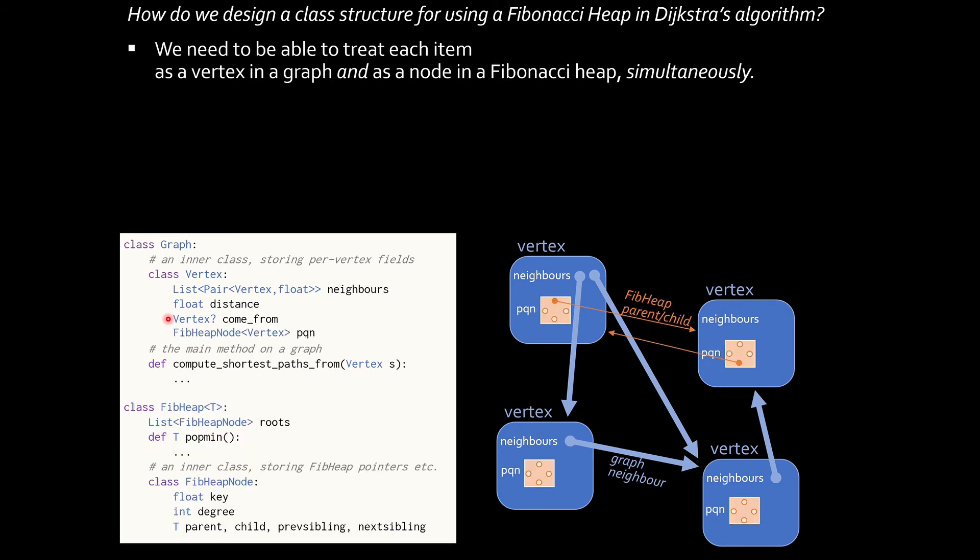If I want to also say each vertex is simultaneously a node in a priority queue, we could achieve it like this. The main change is here, where I'm saying for every vertex, I want to store another field. I'll call it PQN for priority queue node. And this extra field will have type FibHeapNode. FibHeapNode is a class which maintains all the fields that you need for a priority queue.